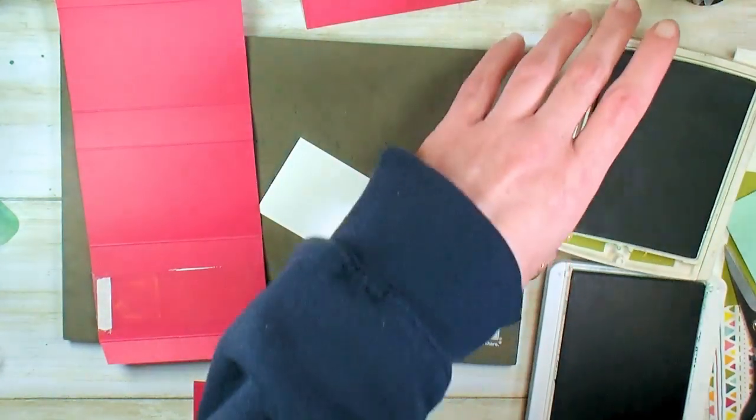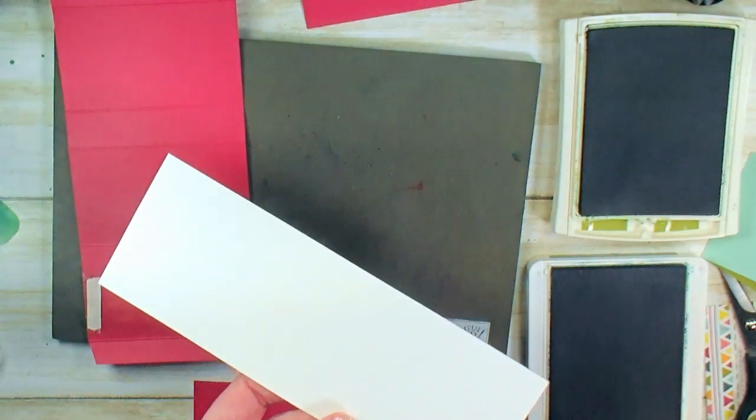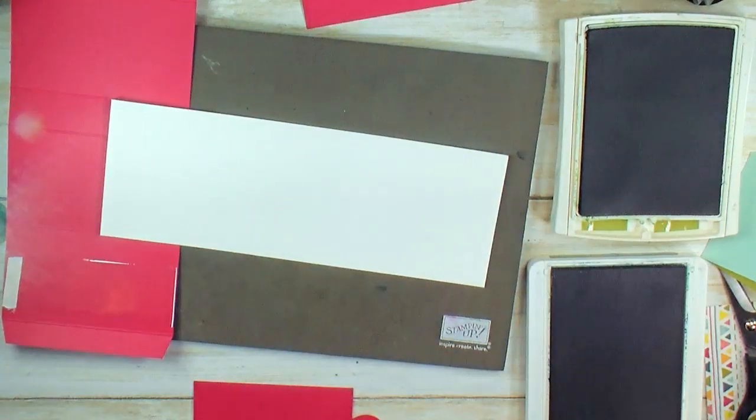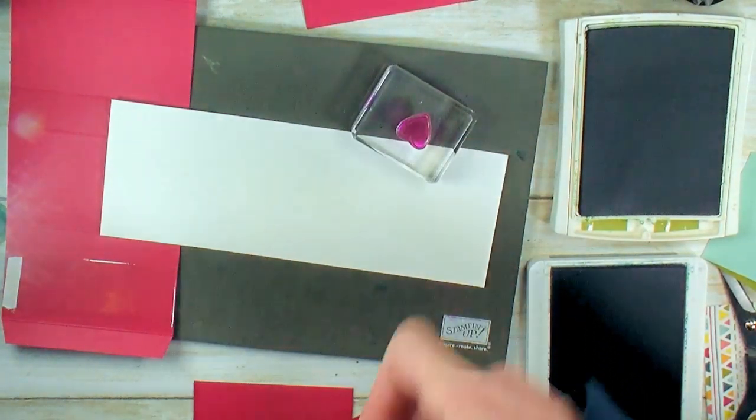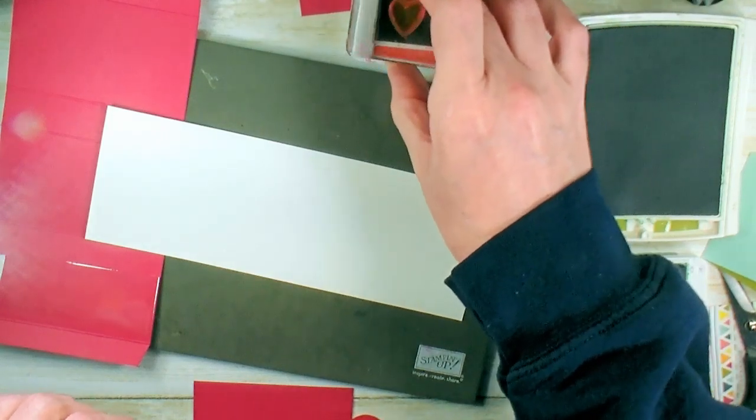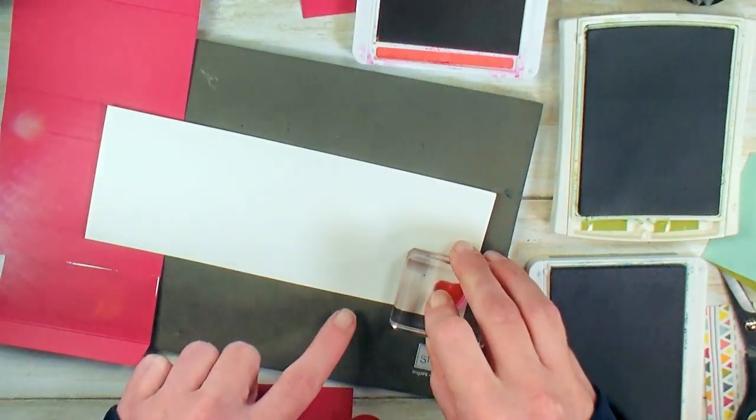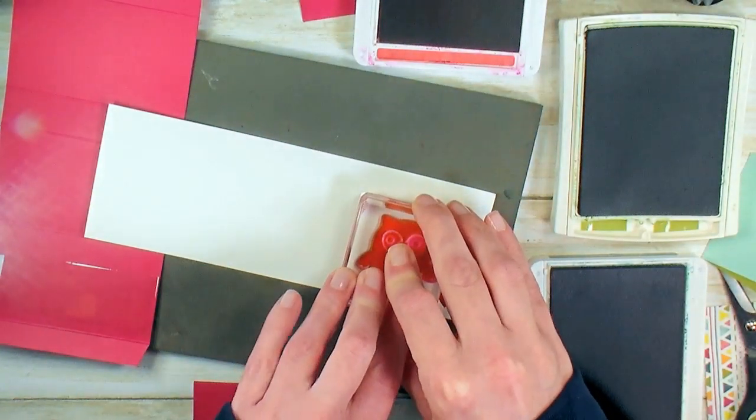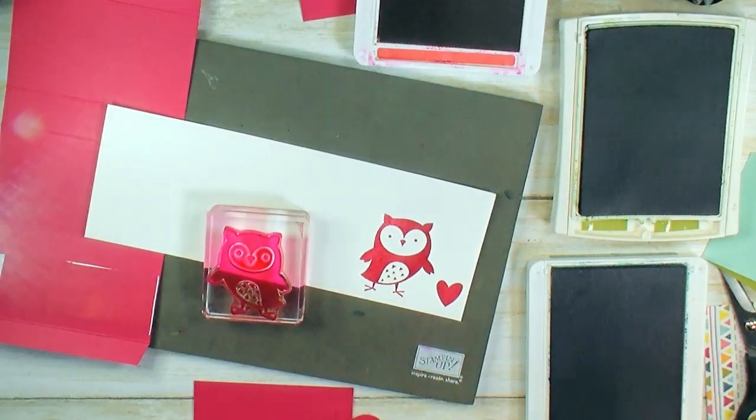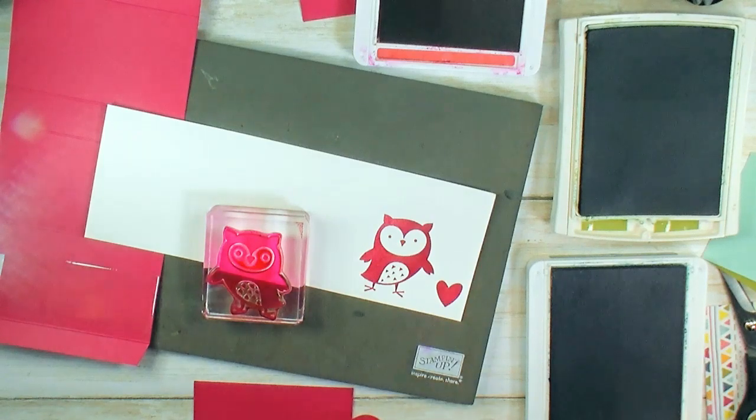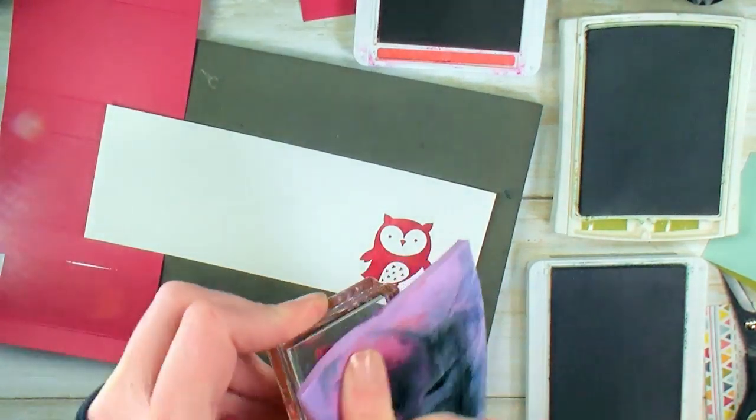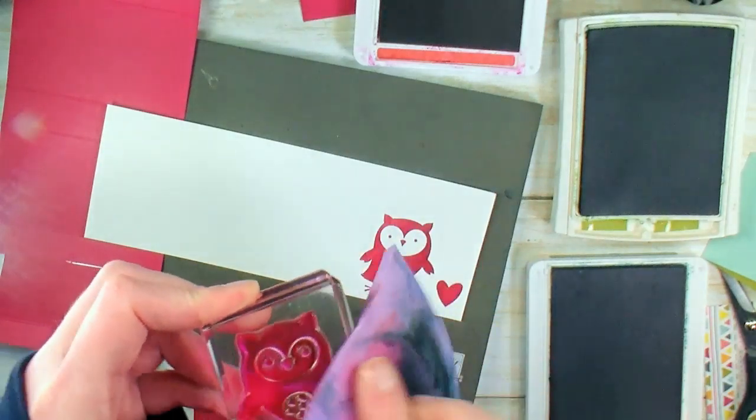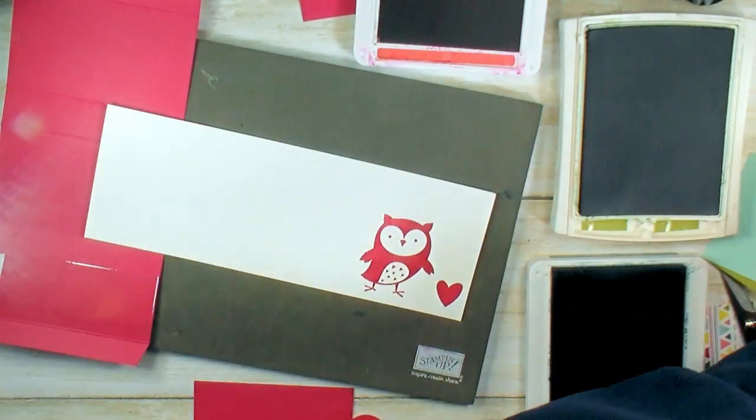Now I've got a scrap of Whisper White. For the inside, we want the little heart from Check You Out. All these fantastic images are right from the Check You Out stamp set. Lovely lipstick ink, retiring in color. Let's stamp a little heart. And let's stamp a little owl. Then we're going to clean our little owl and set it aside so that we can do the belly in a separate color. Lovely lipstick on Whisper White.